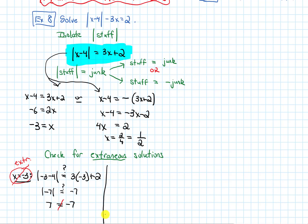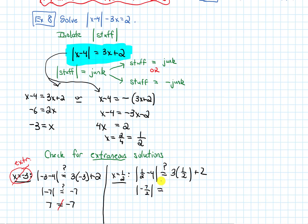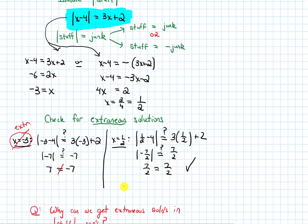Now I have to check x equals 1/2. Plugging in: absolute value of 1/2 minus 4, equals 3 times 1/2 plus 2. The left side gives the absolute value of negative 7/2. On the right, 3/2 plus 2 equals 7/2. The absolute value of negative 7/2 is positive 7/2, so 7/2 equals 7/2 — check mark. So x equals 1/2 is the only answer.